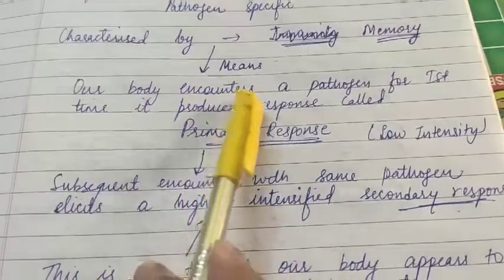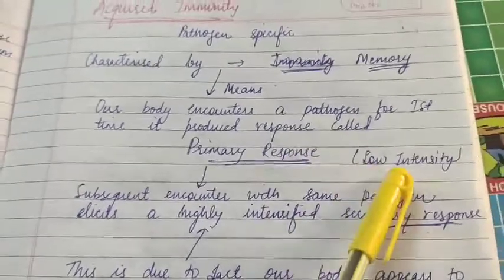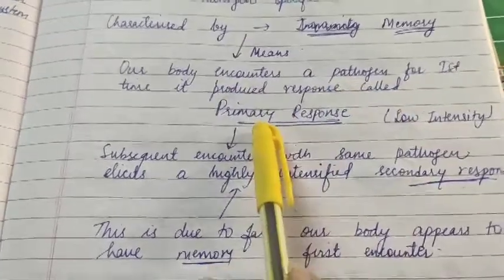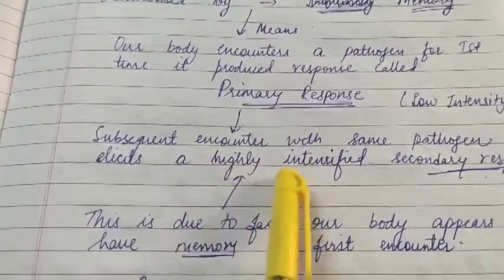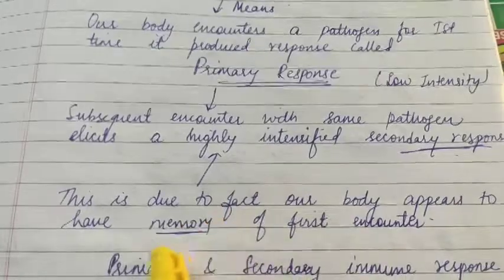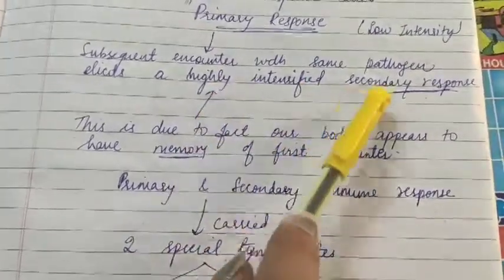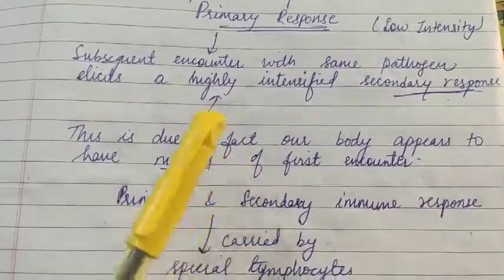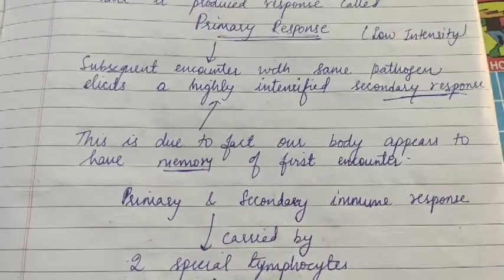When our body encounters a pathogen for the first time, it produces a primary response that is of low intensity. Subsequent encounter with the same pathogen elicits a high-intensity secondary response. This is due to the fact that our body appears to have memory of the first encounter, and it is this memory that makes the secondary response possible.